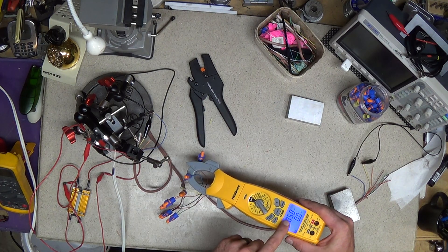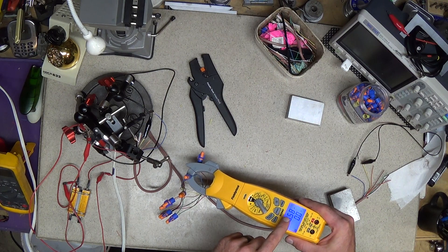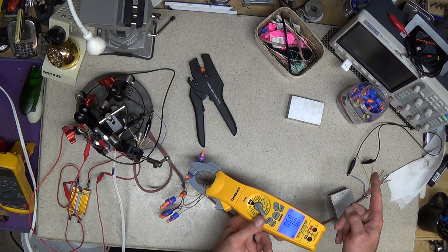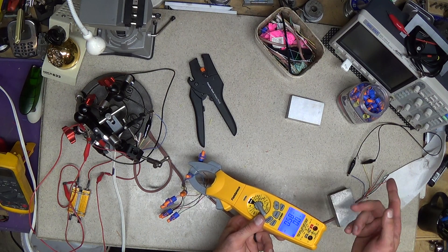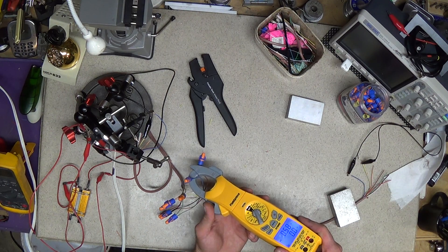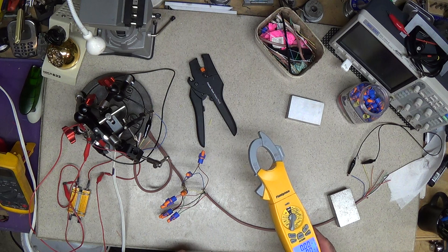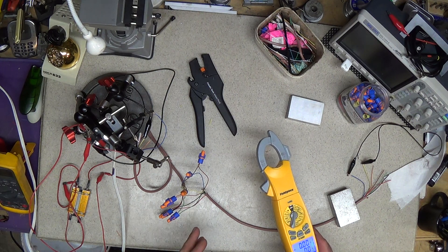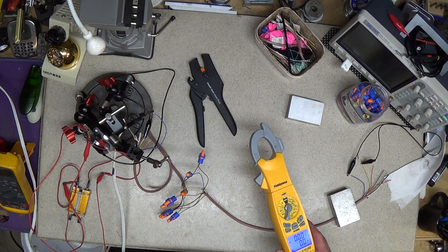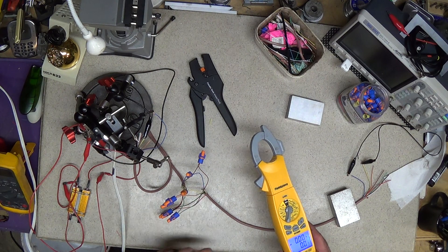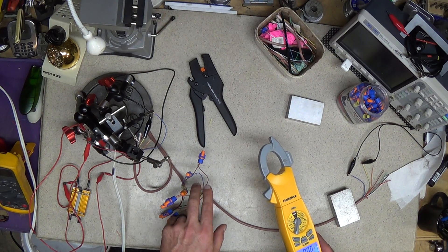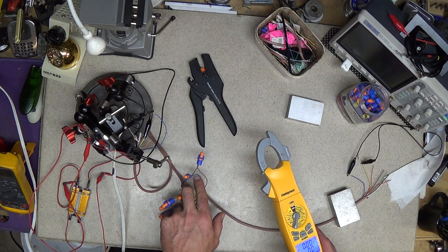So I do have also amperage on the common because my short is between yellow and common, so that makes sense. If the short was between yellow and say the case of the unit, I'm not going to have voltage on that common necessarily.